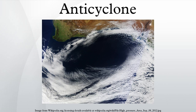Effects — Surface-Based Systems: High-pressure systems are frequently associated with light winds at the surface and subsidence through the lower portion of the troposphere. Subsidence will generally dry out an air mass by adiabatic heating. Thus, high-pressure typically brings clear skies. Because no clouds are present to reflect sunlight during the day, there is more incoming short-wave solar radiation and temperatures rise. At night, the absence of clouds means that outgoing long-wave radiation is not absorbed.